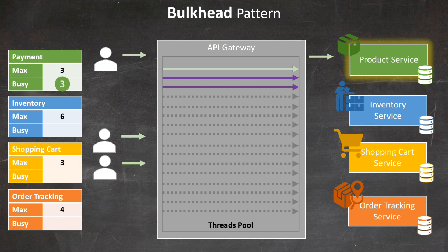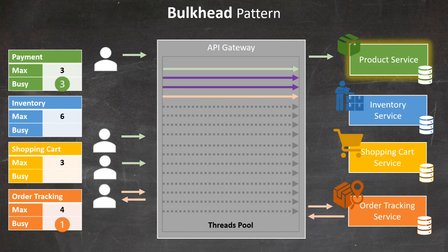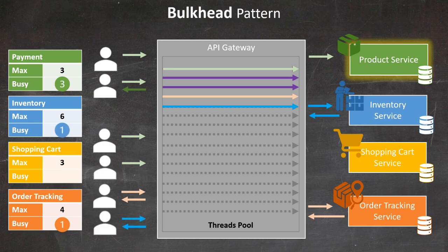More payment requests arrive and are handled until we reach the maximum number of threads allocated for the payment service. This is where the magic of the bulkhead pattern becomes apparent. An order tracking request comes in and, despite the payment service being at capacity, it's processed normally because it has its own resource pool. When another payment request arrives, it gets rejected because the payment service's thread pool is full. However, the system can provide a custom error response specific to the service experiencing the issue, improving the user experience. Meanwhile, an inventory service request comes in and is processed without problems, unaffected by the payment service issues.